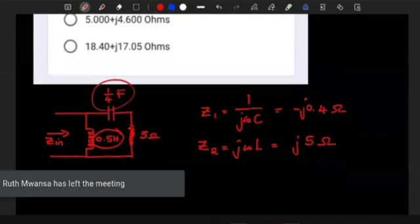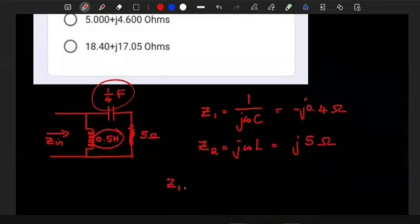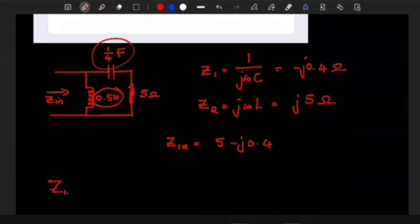You combine the impedance of the capacitor and the resistor because they're in series. So Z1 and the resistor, since they're in series, are going to add. So it's going to be 5 minus j 0.4.